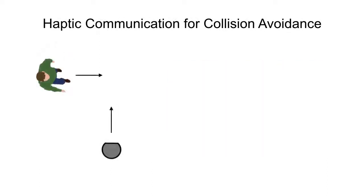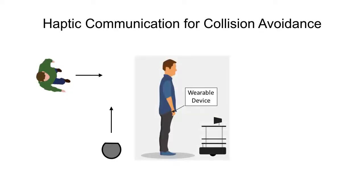We focus on a single human-single robot orthogonal encounter scenario where one of them has to yield to the other. We propose to use a wearable haptic interface to communicate the robot's intent to the human user.